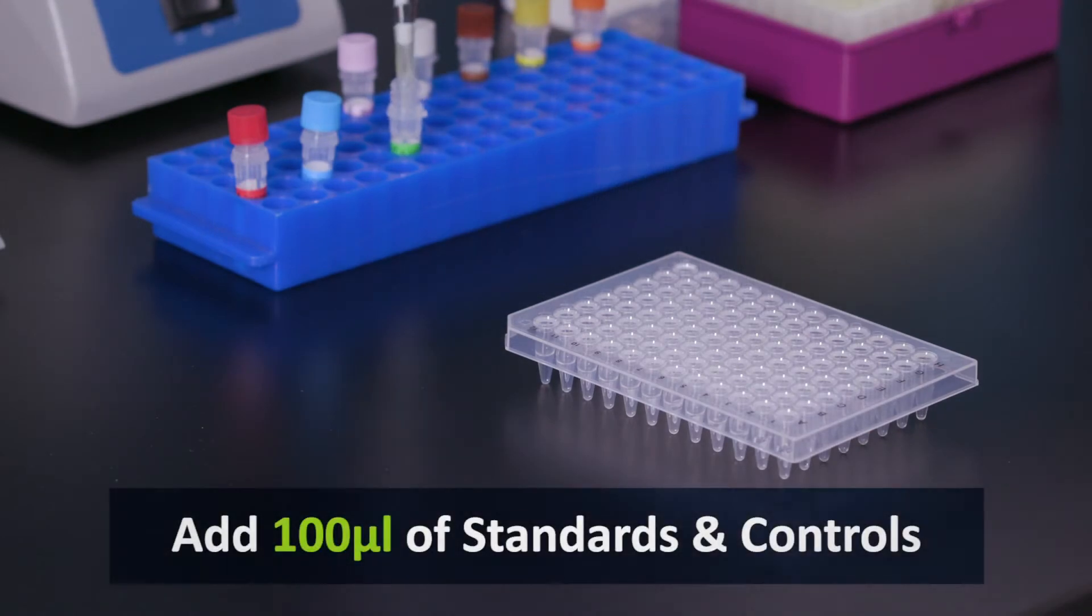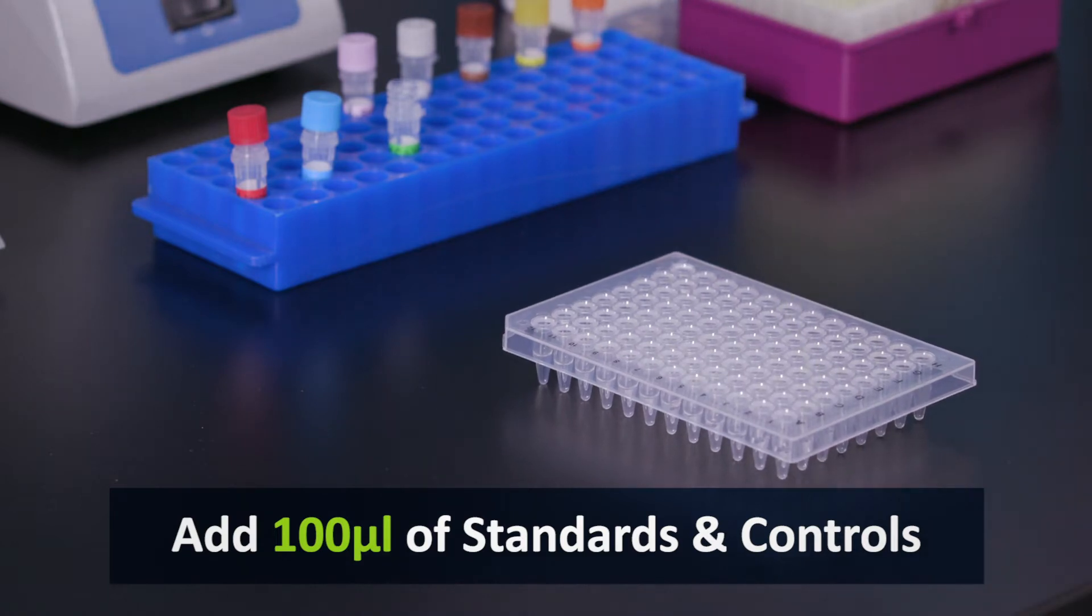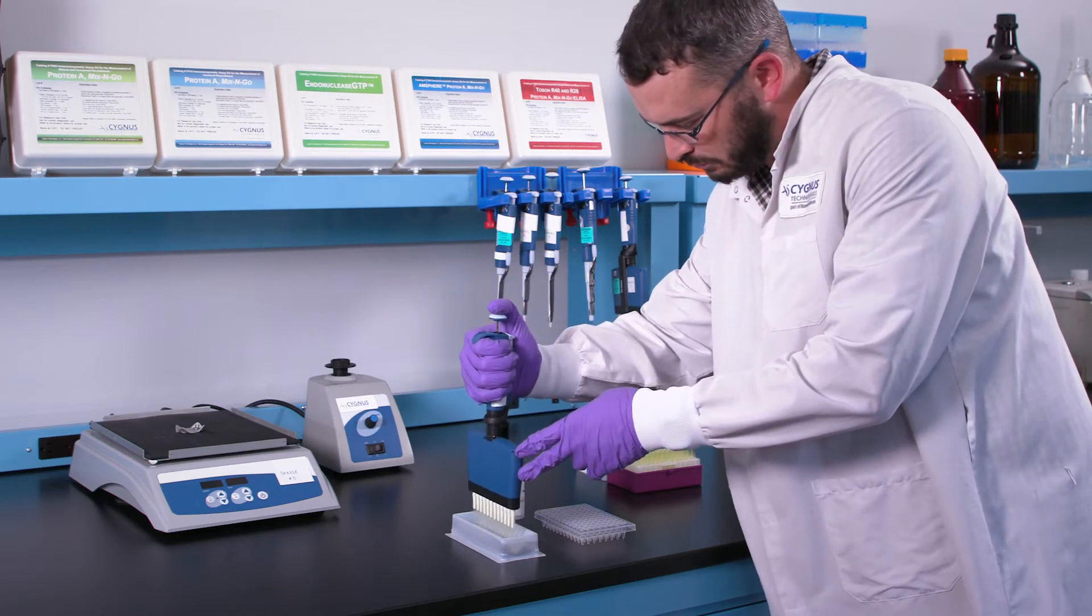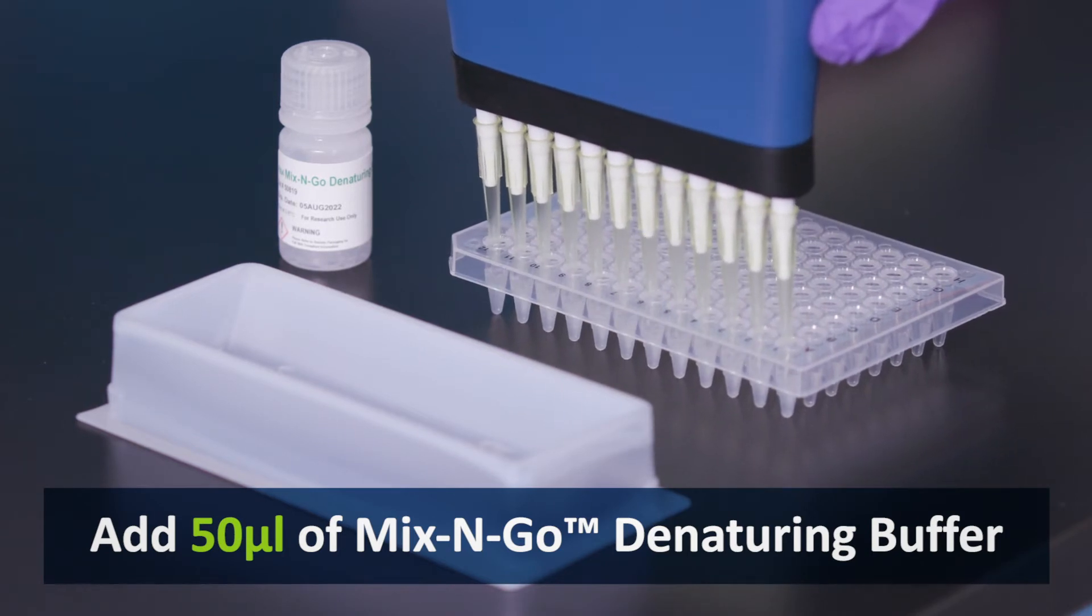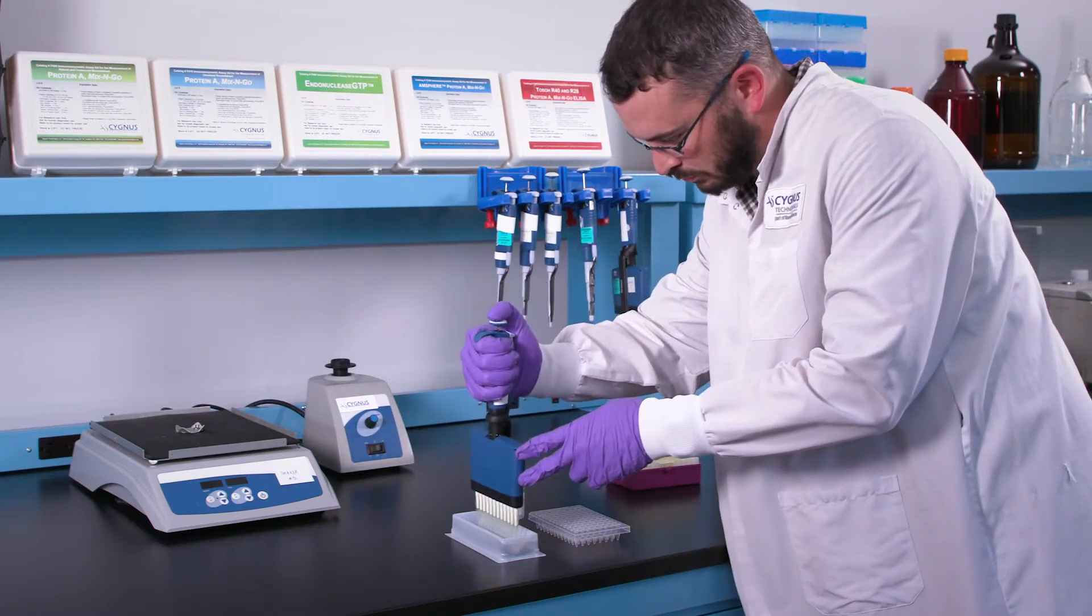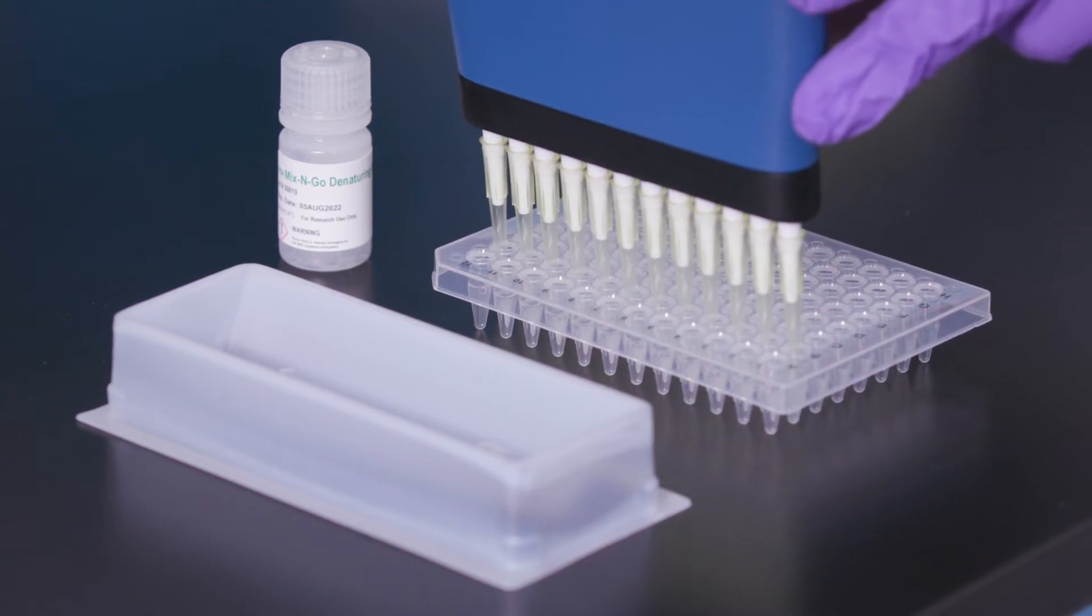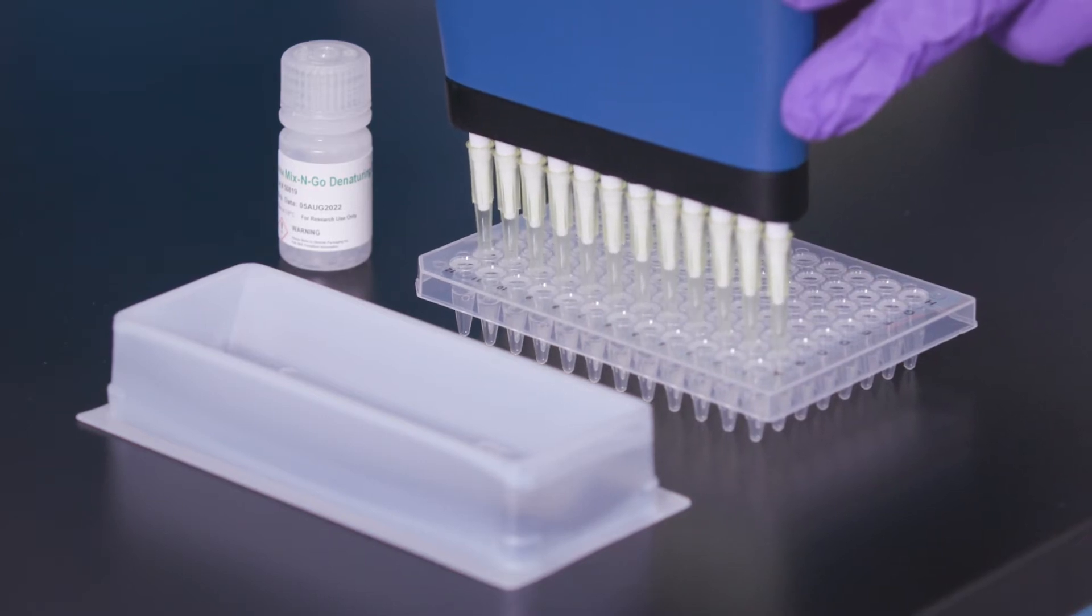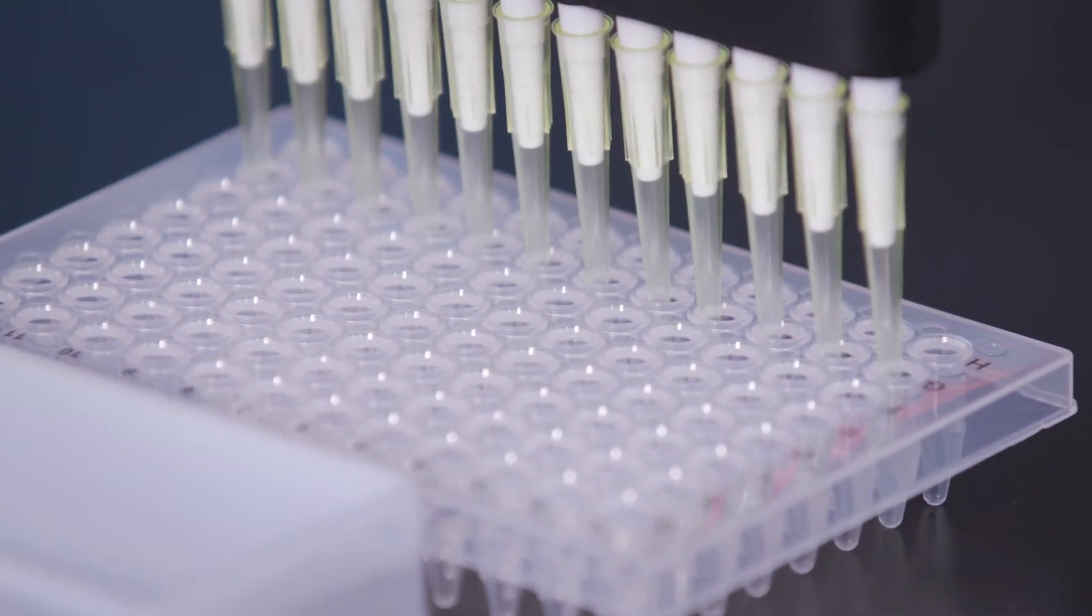Now, add 100 microliters of the kit standards and controls to the wells. Then, add 50 microliters of Mix & Go denaturing buffer to each well and immediately mix. For example, if the replicates are in A1 and A2, position the multichannel pipette horizontally when adding the Mix & Go denaturing buffer. Mix by pipetting up and down approximately 15 times. For best results, mix quickly to avoid creating bubbles in the sample treatment wells.